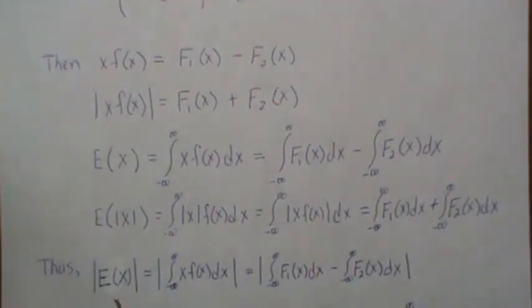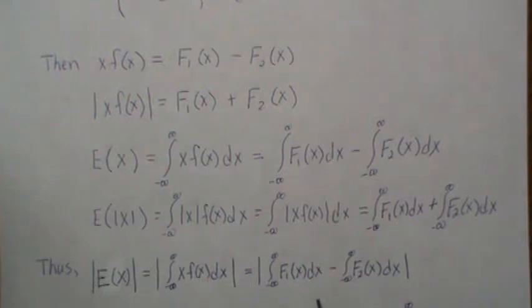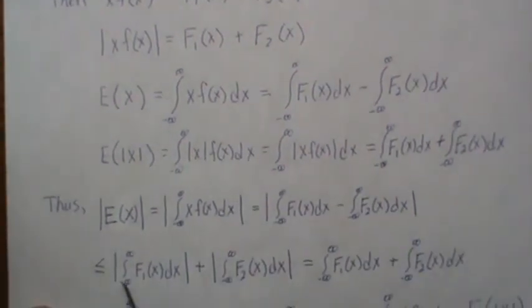Thus, the absolute value of expected value of X is this, which is the subtraction of these two quantities. Then there's an absolute value identity: if you have two numbers, it's always less than or equal to